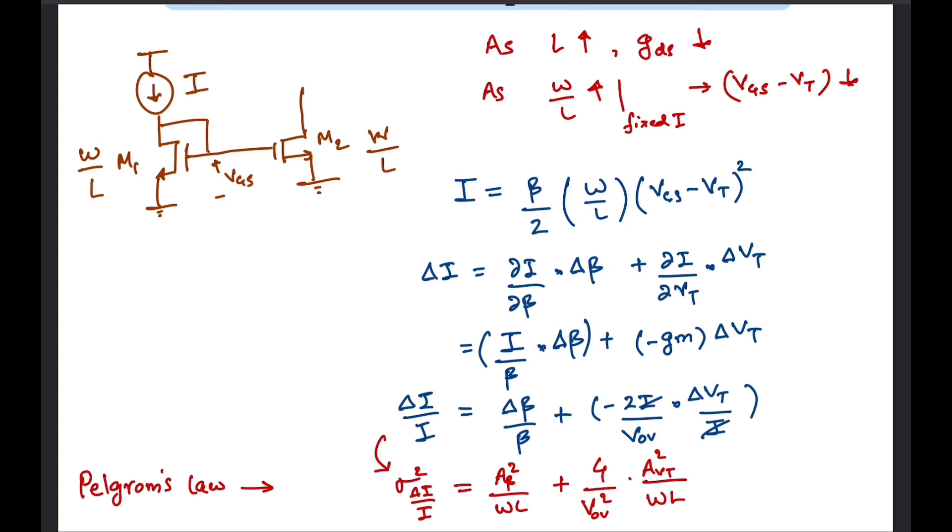As expected, the ID mismatch decreases with increasing W and L. Additionally, it also increases as V overdrive decreases. Therefore, to get a good matching in current we generally don't keep a minimum overdrive voltage at the expense of some voltage headroom.